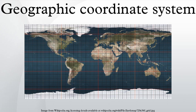Lines joining points of the same latitude trace circles on the surface of the Earth called parallels, as they are parallel to the equator and to each other. The north pole is 90 degrees north. The south pole is 90 degrees south.